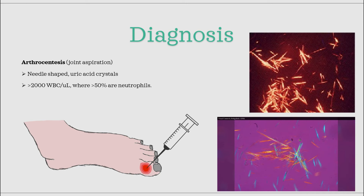Now to diagnosis. The first test to know is arthrocentesis, which is aspiration from the joint. The classic finding seen in gout is accumulation of uric acid crystals in the synovial fluid — these crystals are distinctly needle-shaped. There will also be some accumulation of leukocytes; a count over 2,000 per microliter, where at least 50% are neutrophils, is a good indicator for gout. If the count is much higher, it can be an indication of another cause of arthritis, like septic arthritis, which is the most important one to rule out.